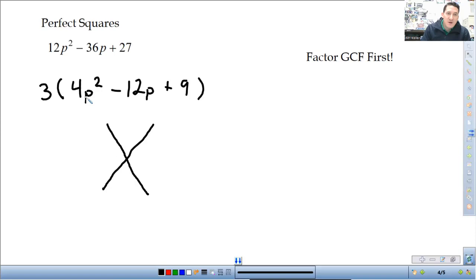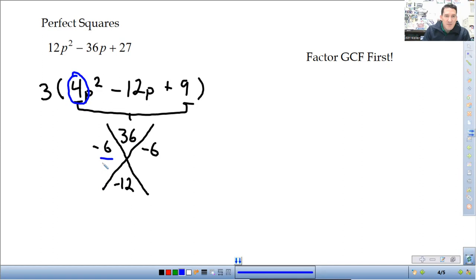Then, from here, this does end up as a perfect square trinomial. But I'm going to do the x factor on it. So, this is 3. I'm going to multiply the 4 and the 9 together to get the top. That's 36. Negative 12 on bottom. Two numbers that multiply to 36, add to negative 12. That's going to be negative 6, negative 6. Don't forget, with this part, since we multiplied by 4, we have to divide it back out. Reduce those fractions.